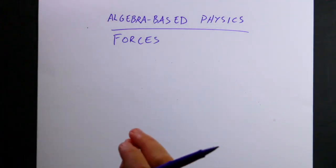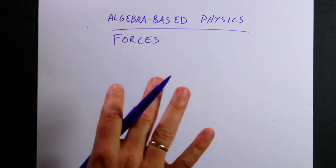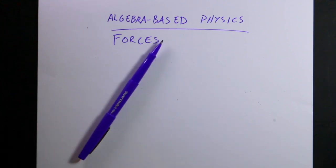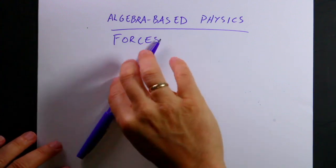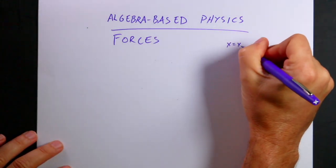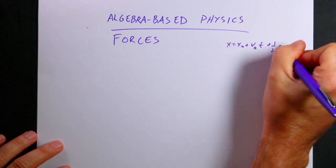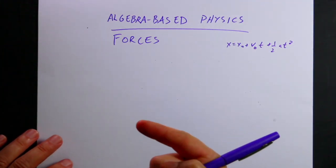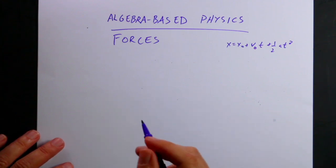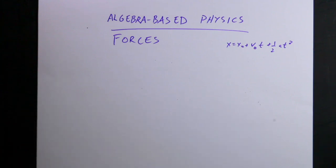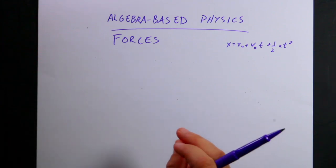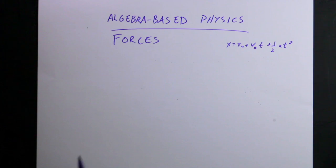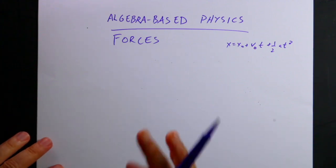I'm going to go over everything that you need to know for this chapter on forces. For my course, the first topic is forces. If you are in another algebraic physics course, you might start with kinematics — x equals x naught plus v naught t plus one half a t squared. But the book I'm using this semester is John Batiste's College Physics, 5th edition, which starts off with forces. I'm going to go over all the big ideas in this chapter. I'm not going to solve problems, and I won't focus a lot on vectors since I already have a video about that linked below.